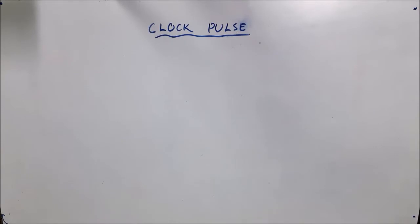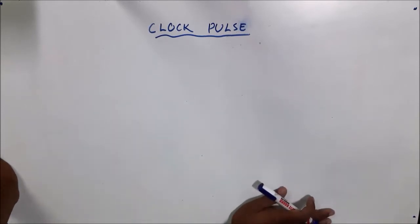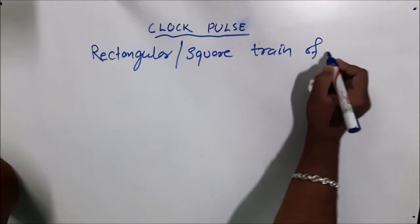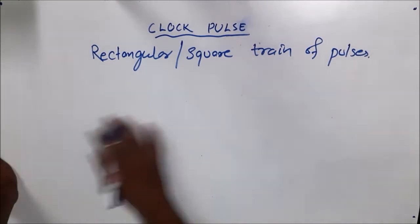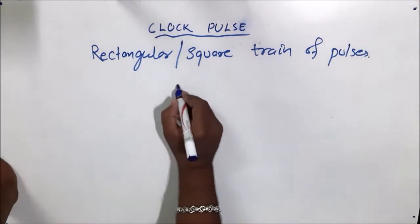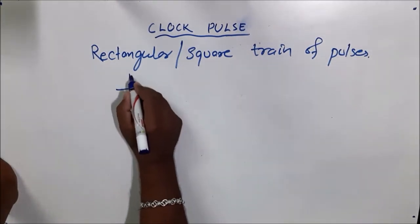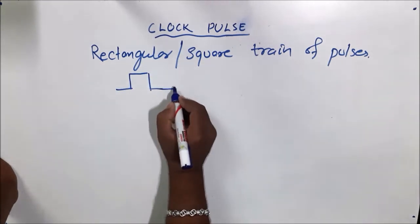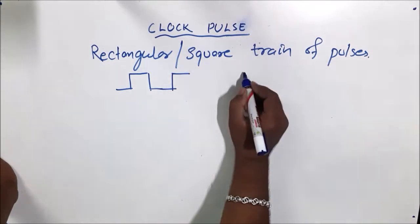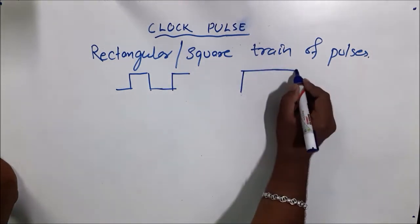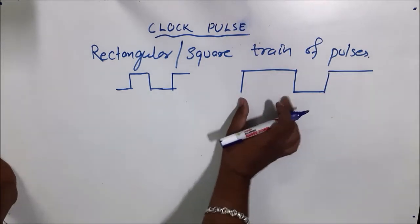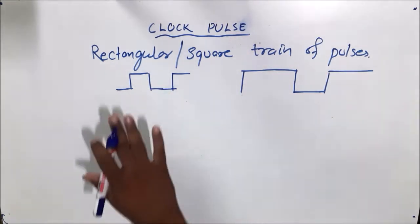Hi everyone! Today's lecture will study about clock pulses. Clock pulses are nothing but a rectangular or square train of pulses. It may be a square pulse, where the height and width are both the same, or it may be rectangular. Both types of pulses can be called square pulses.